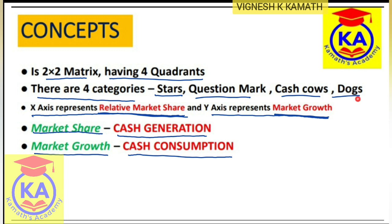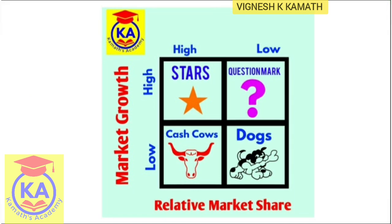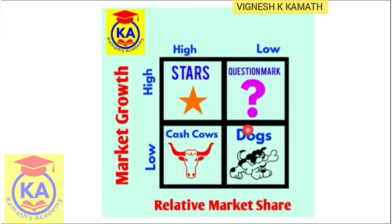There are four categories: Stars, Question Mark, Cash Cows, and Dogs. Stars have high relative market share and high market growth. Question Mark has low market share and high market growth. Cash Cows have high market share and low market growth. Dogs have low market share and low market growth.